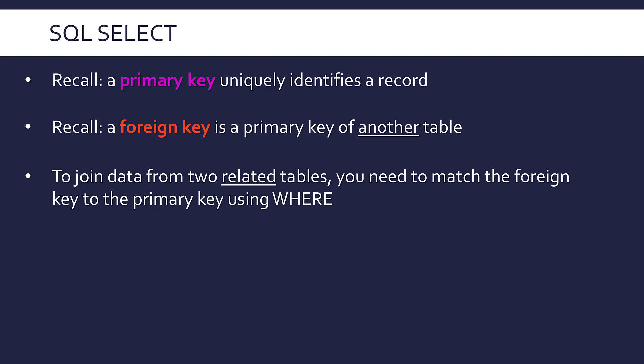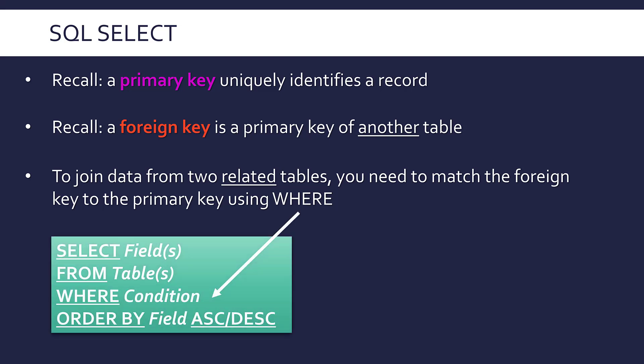If you want to use SQL SELECT to get data from two related tables, you need to match up the foreign key to a primary key using the WHERE clause in SQL SELECT. That's really what I'm going to show you - how you use WHERE to join up the tables. There is another operation called INNER JOIN in SQL, which I'm not going to teach because personally I think SELECT is simpler. And these are the four clauses - same idea as last video, just now with the extension of a second table.